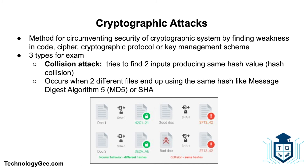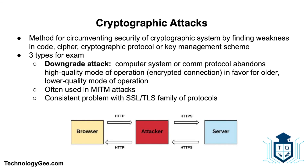Next is a collision attack — this is an attack that tries to find two inputs producing the same hash value, or hash collision. A collision occurs when two different files end up using the same hash. Message Digest Algorithm 5, or MD5, is a legacy hashing algorithm used to attempt to provide data integrity; however, MD5 is susceptible to collisions. By checking the hash value produced by the downloaded file against the original hash, you can verify the file's integrity with a level of certainty.